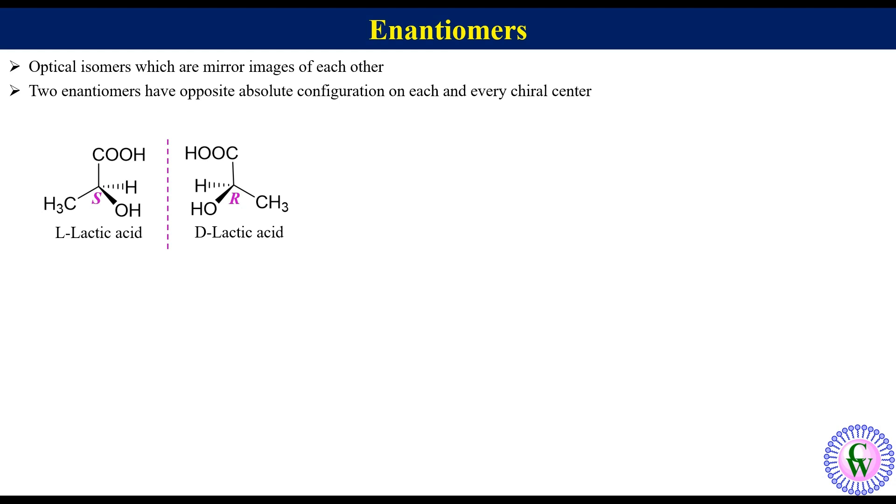I am not going to discuss how to find absolute configuration in this lecture as I have made a separate video for that. I have shared the link for this video in the description box or you can find it by clicking on the I button. You can use this method to find the relation between two optical isomers when they are drawn differently.